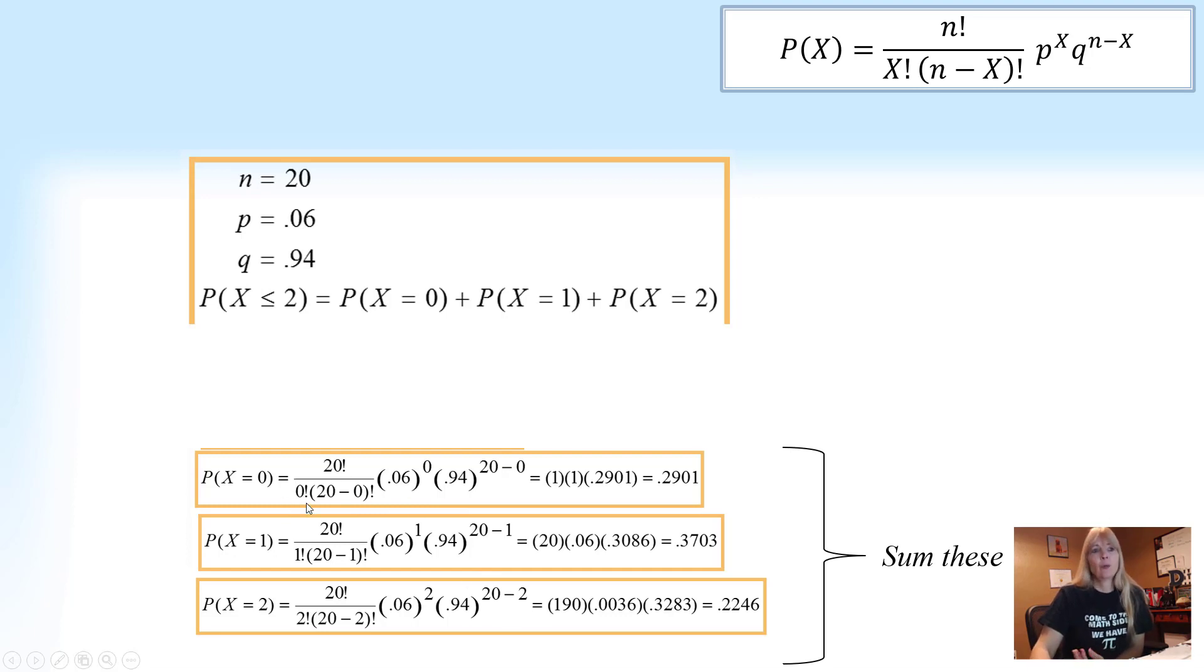Some things to note. 0 factorial is 1. Anything to the 0 power is 1. So just some of those things to remember.